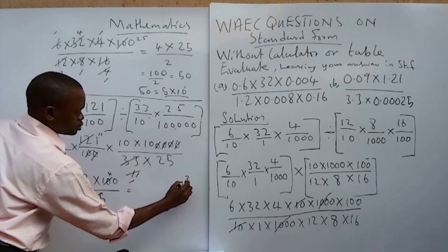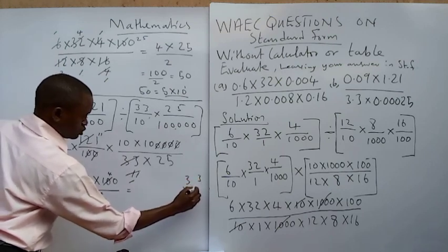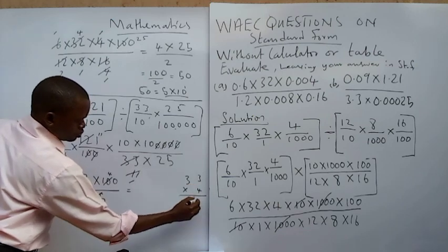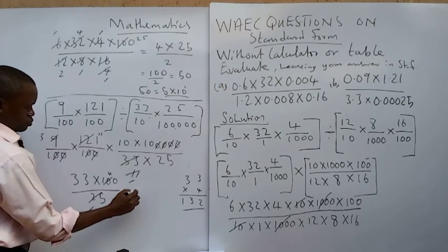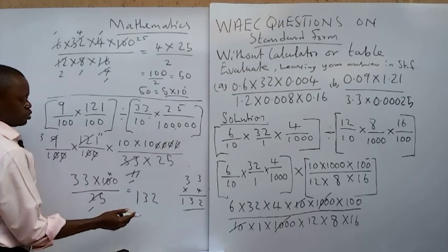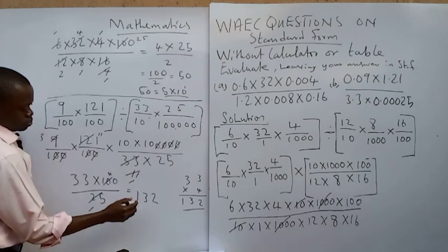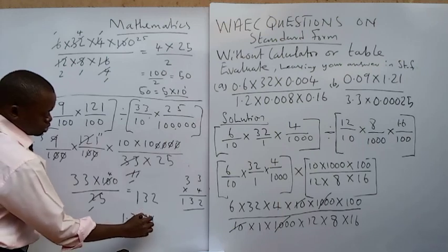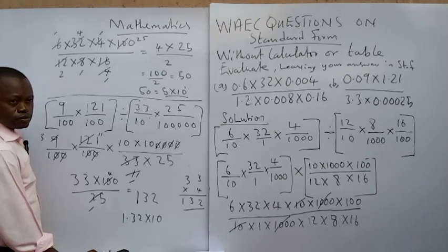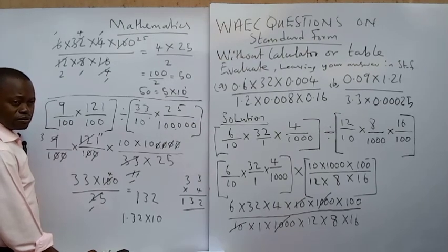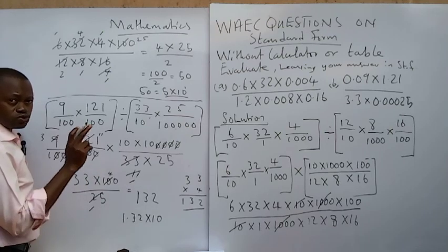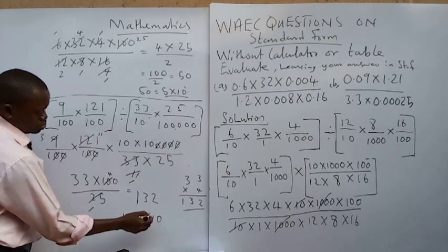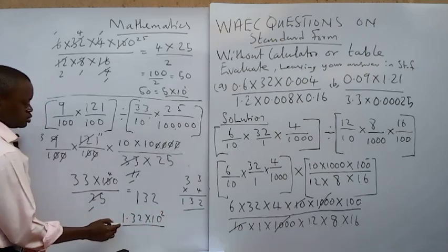So we now have 3 times 4 — because 25 cancels into 100 giving 4 — which is 12. Then 3 times 12: 3 into 12 is 12, write 2 carry 1, and 12 plus 1 is 13, so we have 132 as our answer. But they say put this answer in standard form. So 132 in standard form is 1.32 times 10 to the power 2, because the number of digits minus 1 gives us 3 minus 1 equals 2.